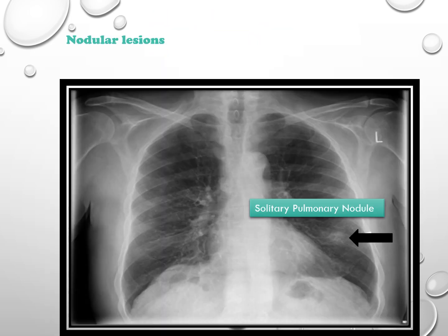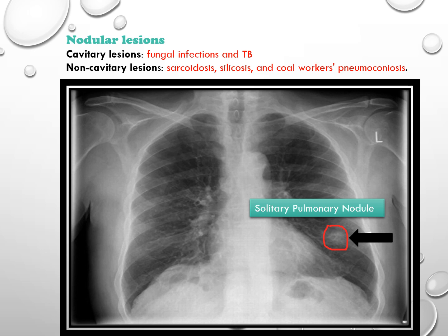Nodular lesions on a chest x-ray can be characterized as either cavitary or non-cavitary. Cavitary lesions can be seen in fungal infection and tuberculosis. Non-cavitary lesions can be seen in sarcoidosis, silicosis, and coal workers' pneumoconiosis.